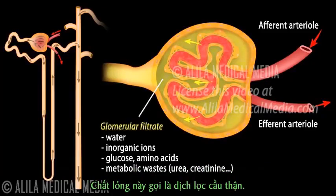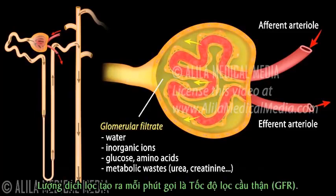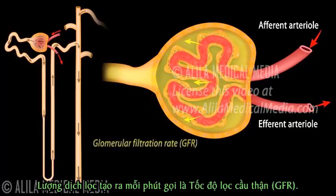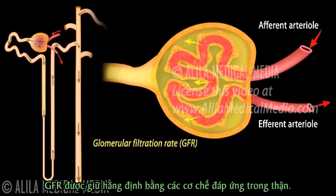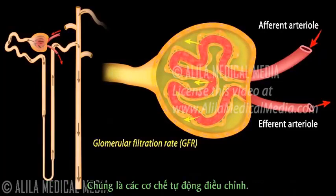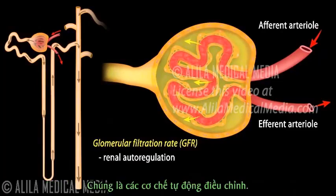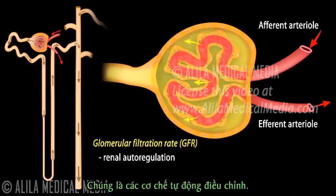This fluid is called glomerular filtrate. The amount of filtrate produced per minute is called the glomerular filtration rate, or GFR. The GFR is kept at a stable value by several feedback mechanisms within the kidneys, known as renal autoregulation.